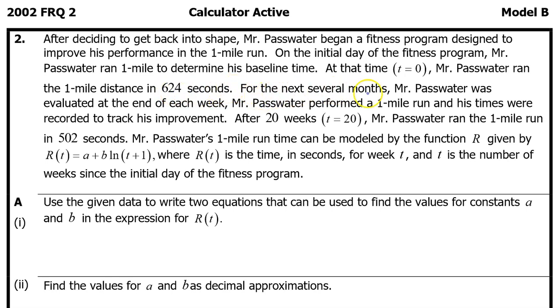For the next several months, Mr. Passwater was evaluated at the end of each week. Mr. Passwater performed a one-mile run and his times were recorded to track his improvement. After 20 weeks, t equals 20, Mr. Passwater ran the one-mile run in 502 seconds.